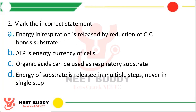Question 2: Mark the incorrect statement. Statement A: energy in respiration is released by reduction of C-C bond of substrates. Statement B: ATP is the energy currency of the cells. Statement C: organic acids can be used as respiratory substrates. Statement D: energy of substrate is released in multiple steps, never in a single step. The answer is statement A is incorrect — energy in respiration is released by oxidation of C-C bond substrates, not by reduction.